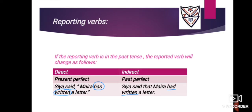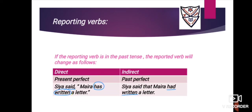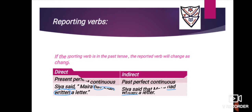Next category: if the reported verb is in present perfect tense, it will change to past perfect tense. Example: 'Siya said, Myra has written a letter.' Underline 'said,' circle 'has written.' Because the reporting verb is 'said,' change the reported verb: 'has written' (present perfect) changes to 'had written' (past perfect). Answer: 'Siya said that Myra had written a letter.'